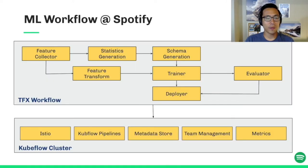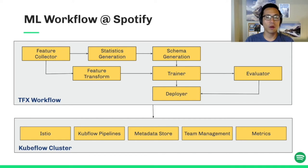This is a typical ML workflow at Spotify. As you can see, it has a sequence of components representing different steps in a machine learning pipeline. It starts with feature engineering — feature collector and transform components assemble the raw features and transform them into meaningful ones for model training. Next, we have stats and schema generation components to validate those features and produce a schema file based on the feature data stats.